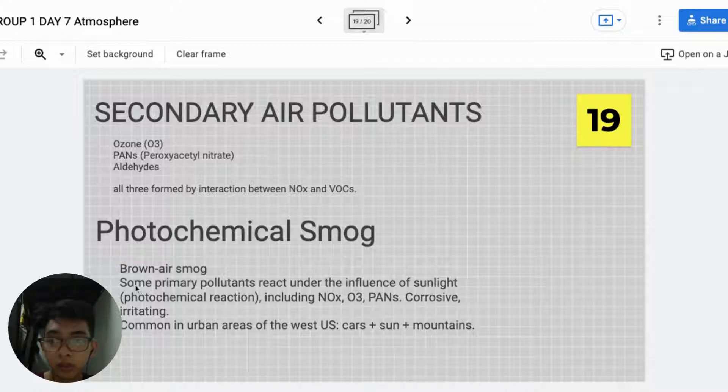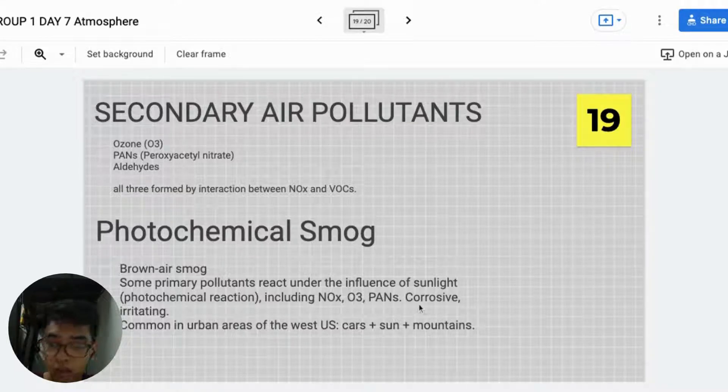Brown air smog. Some primary pollutants react under the influence of sunlight, including NOx, O3, PANs, and corrosive aerosols. Common in urban areas of the western U.S. Cars plus sun plus mountains.